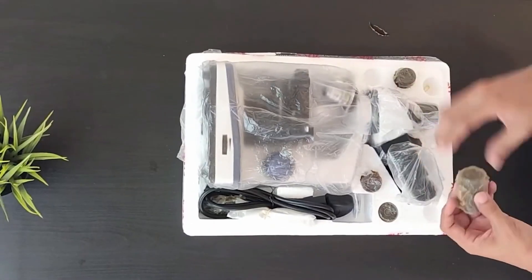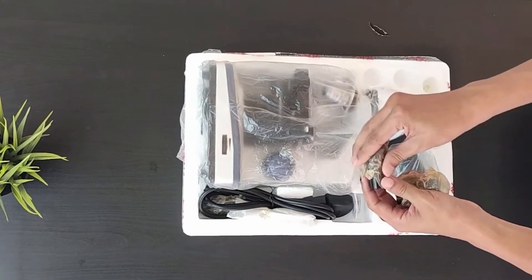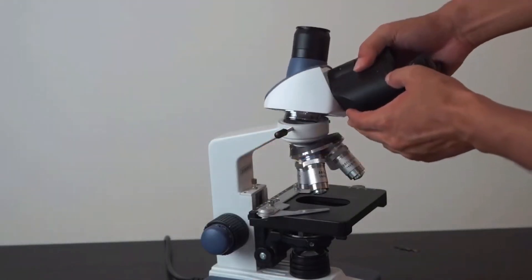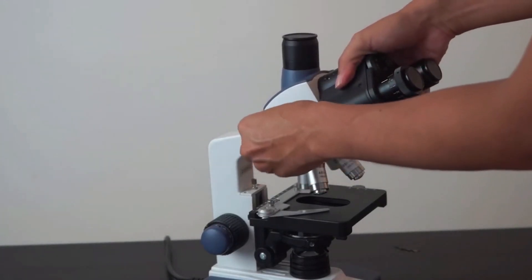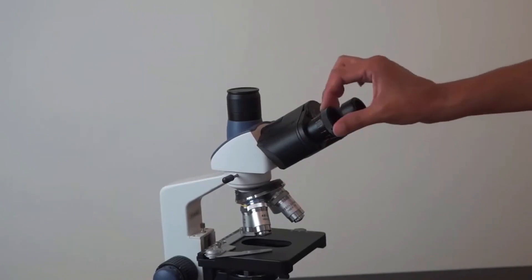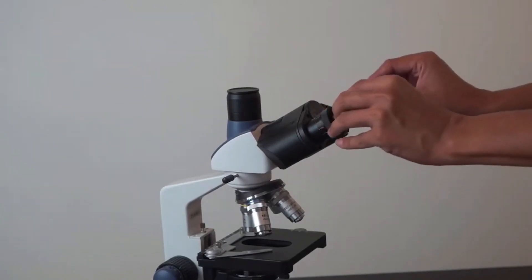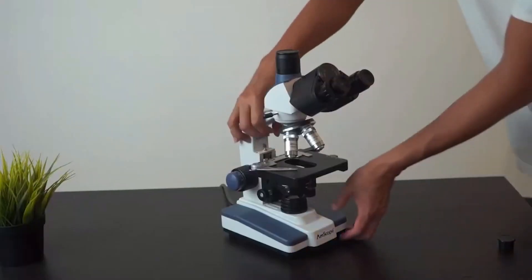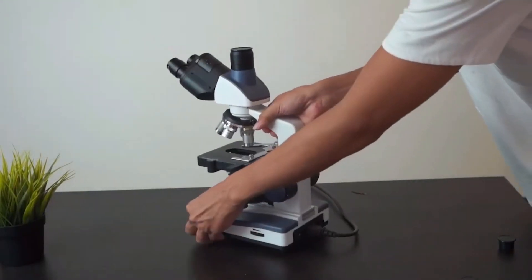You'll also appreciate the double layer mechanical stage, featuring 1mm stage divisions. This handy feature locks your slides into place and offers precise manipulation along both the X and Y axes. This means you can record specific coordinates on the slide, making it easy to return to a particular location for further observation.